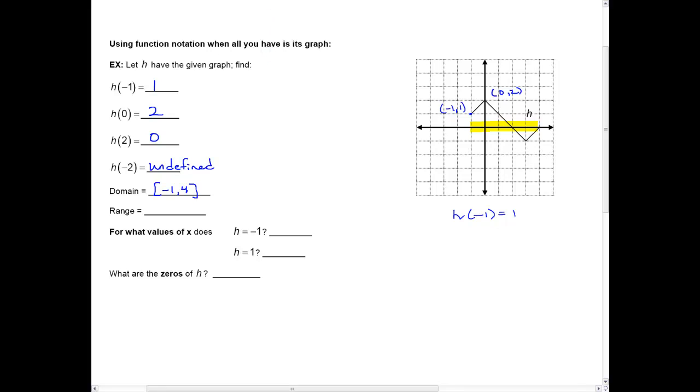And then the range values are just these guys right here. Look at the only y values that are hit are here between negative 1 up to 2. If I think, hey, is negative 2 in the range? There's no graph, there's no place that has negative 2. There's no ordered pair that has negative 2 there. So you can see just by looking at it, the range is going to be from minus 1 up to 2.